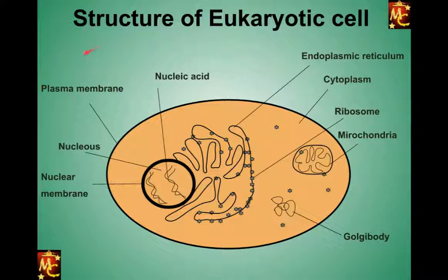Here is the basic structure of a eukaryotic cell — this is a very simple drawing; eukaryotic cells are more complex than this, but this makes it easy to understand. You can see that, similar to prokaryotic cells, eukaryotic cells also have a plasma membrane. This plasma membrane is made up of phospholipids — it is a bilayer membrane.